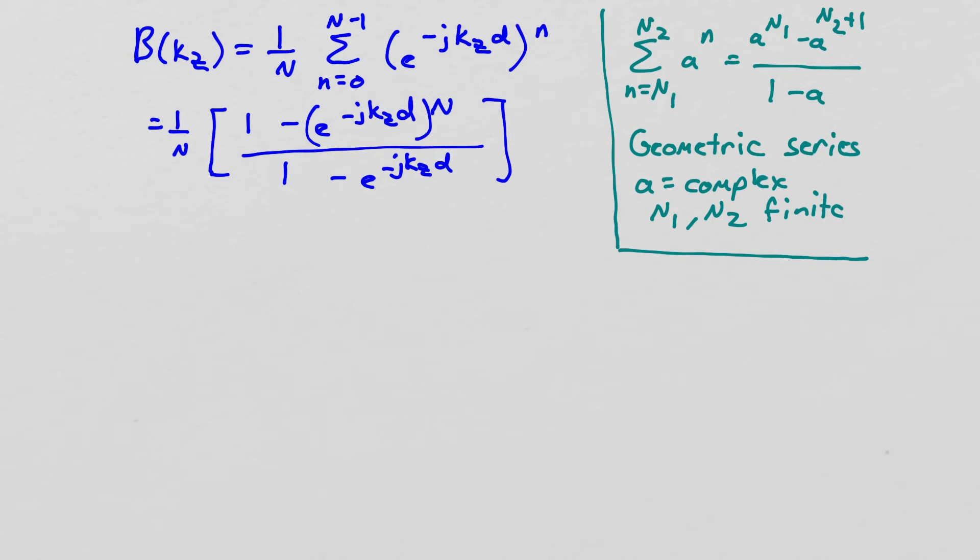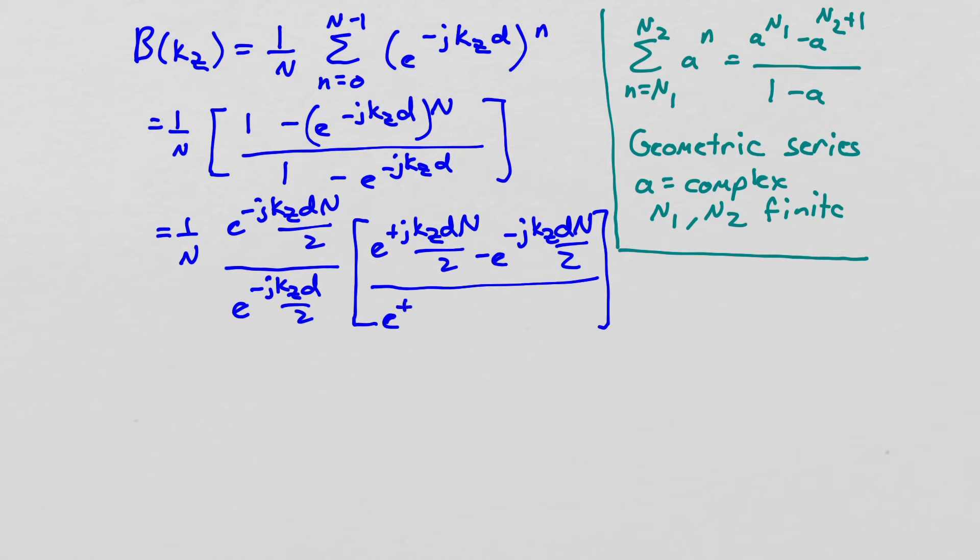Now what I want to do is simplify this a little bit, and I can do that by pulling an exponential factor out of the top and out of the bottom. So I'm going to pull e to the minus j kz d n over 2, that's the exponential I'm going to pull out of the top, and e to the minus j kz d over 2 out of the bottom. And that's going to leave me with e to the plus j kz d n over 2 minus e to the minus j kz d n over 2 on top, and similarly on the bottom, e to the plus j kz d over 2 minus e to the minus j kz d over 2.